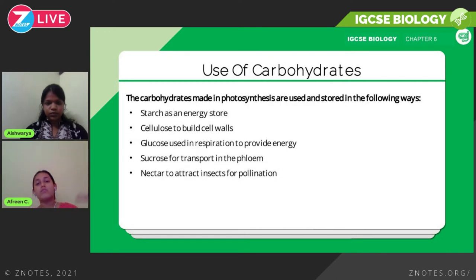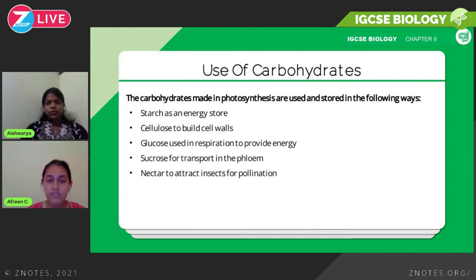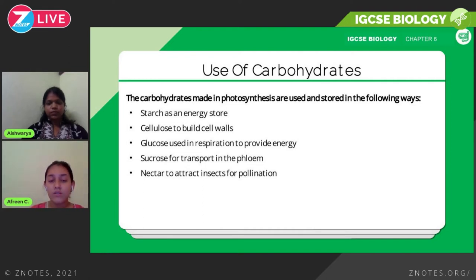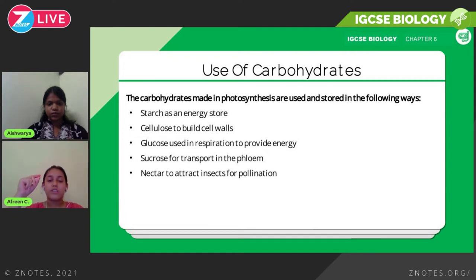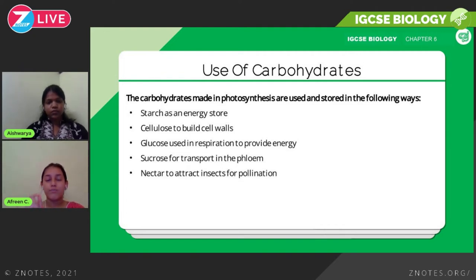Carbohydrates are a product of photosynthesis and are used and stored in several ways. Starch is used as an energy store. Cellulose is used to build cell walls — plant cells have cell walls made of cellulose, which comes from photosynthesis. Glucose is used in respiration to provide energy for the organism to survive. Sucrose is transported in the phloem, and nectar attracts insects for pollination — only plants relying on insect pollination produce nectar.